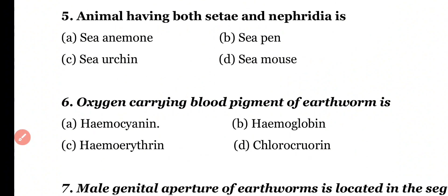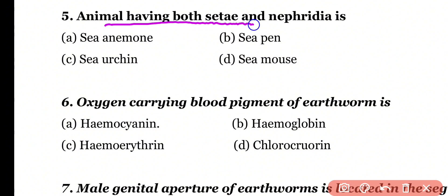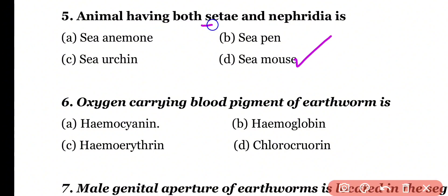Question number 5. Animals which have both chaeta and nephridia: sea anemone, sea pen, sea urchin, or sea mouse. Correct answer is option D. Chaeta and nephridia are present in phylum Annelida. Sea mouse, also known as Aphrodite, belongs to class Polychaeta. So correct answer is option D.